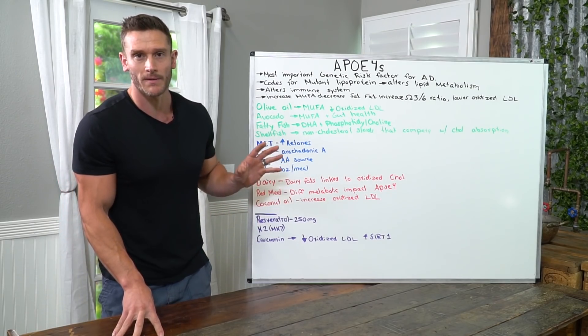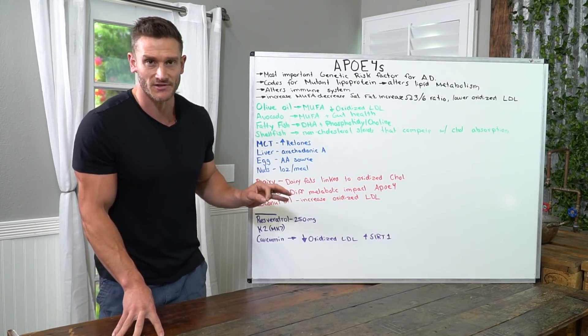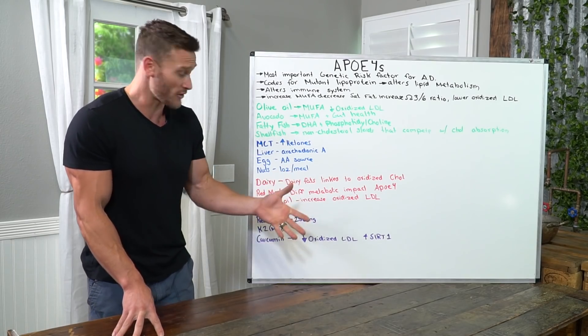Simply because people with APOE4 metabolize the lipids from saturated fat within red meat differently than other people, normal people.